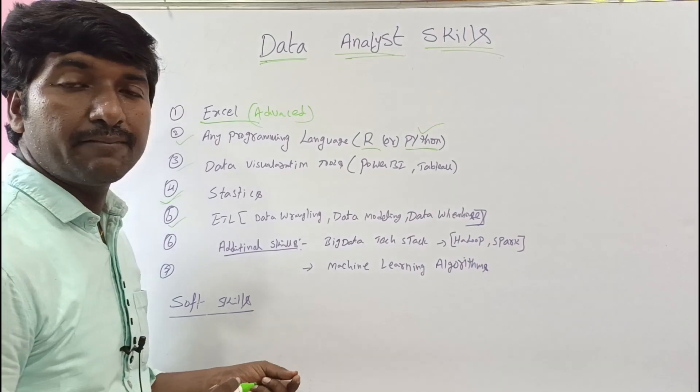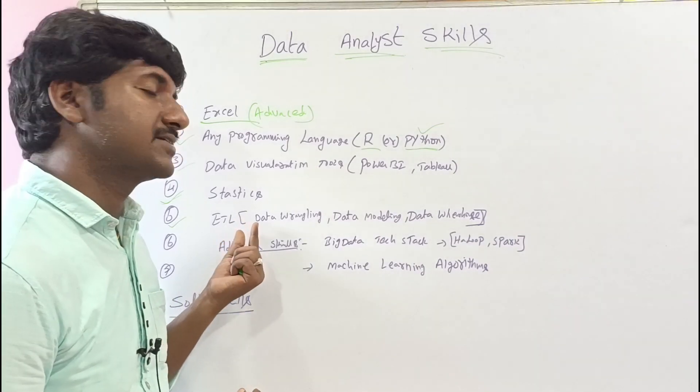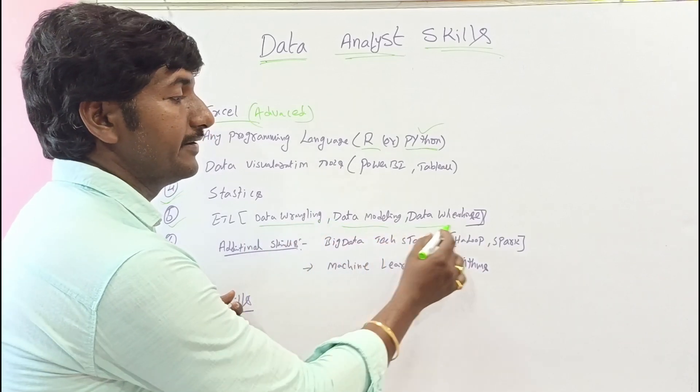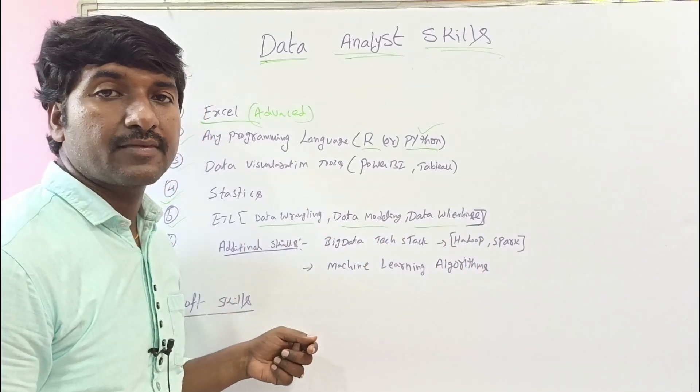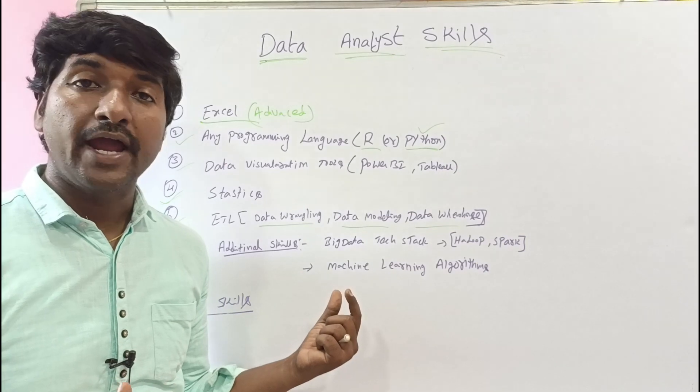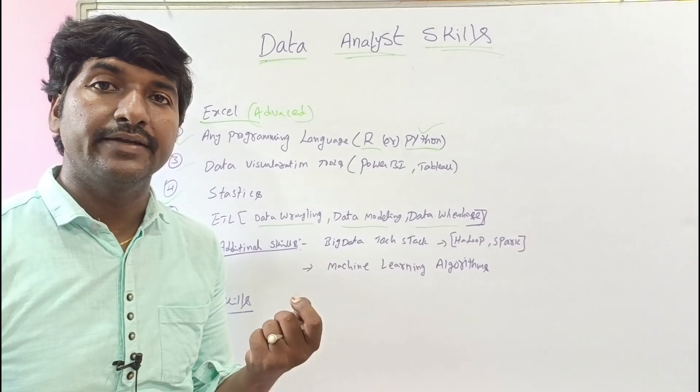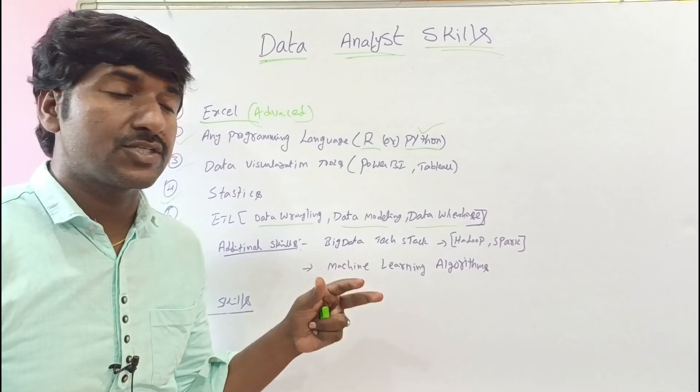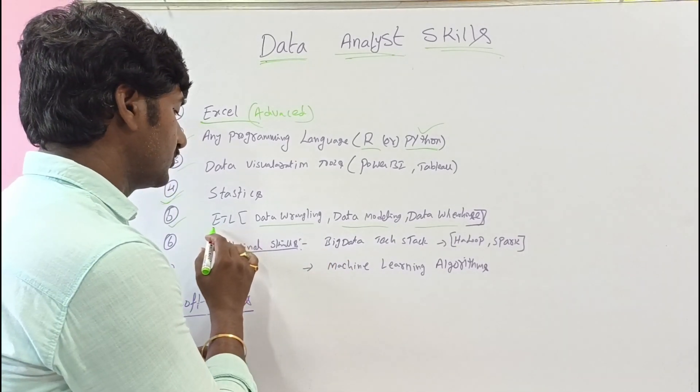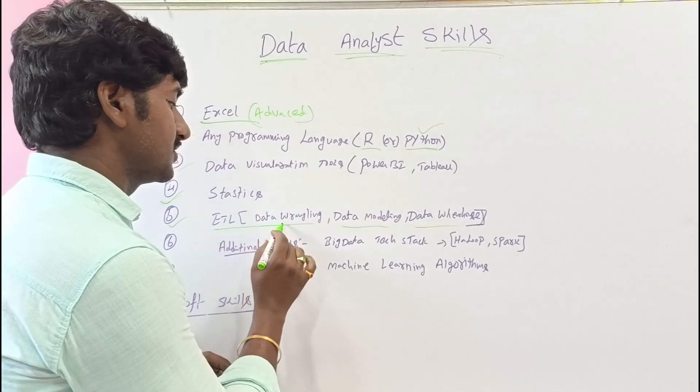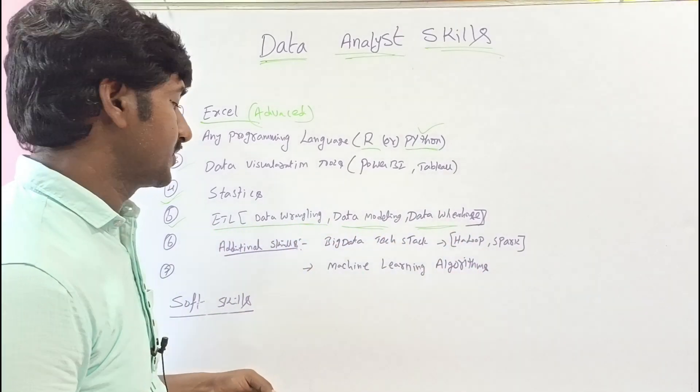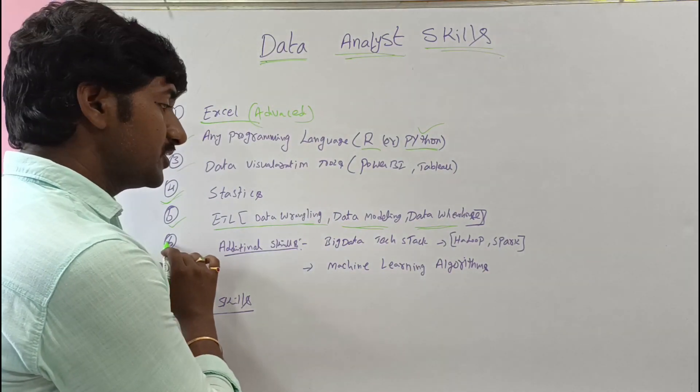The fifth skill is you must have sound knowledge of ETL concepts such as data wrangling, data modeling, and data warehousing. You should also know how to handle missing values and data inconsistencies. These are all things you must know as a data analyst. So these are the primary skills for a data analyst.